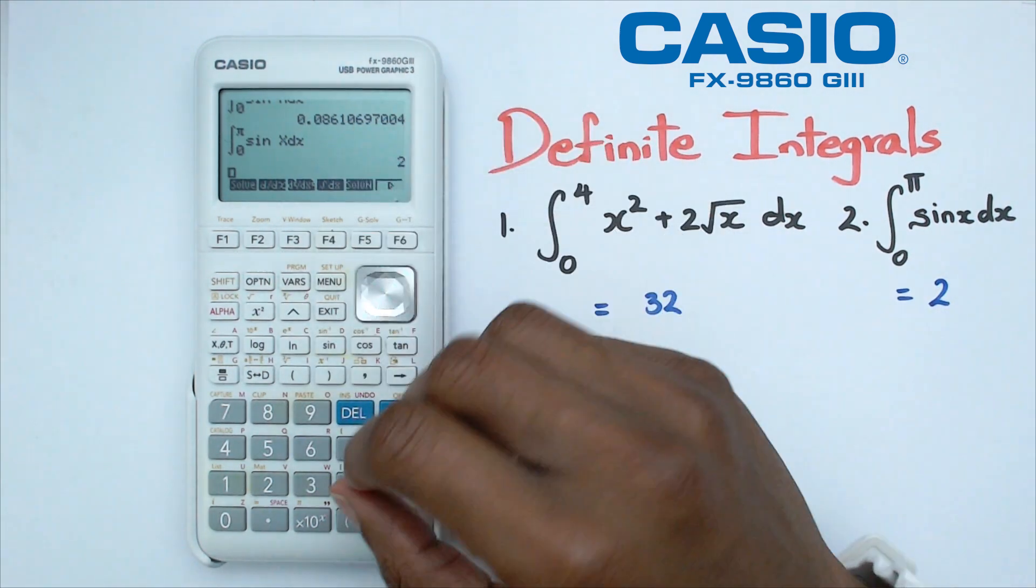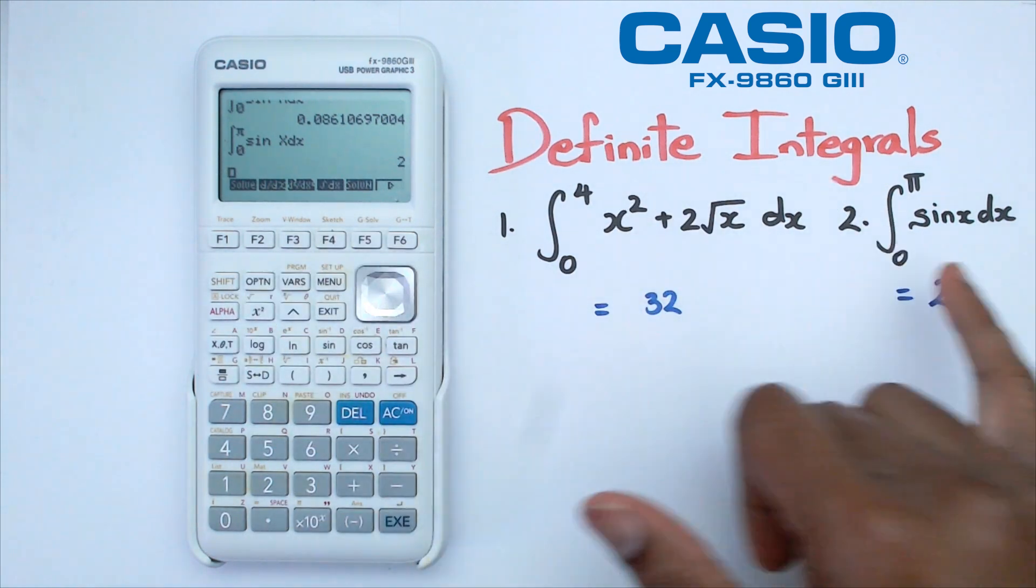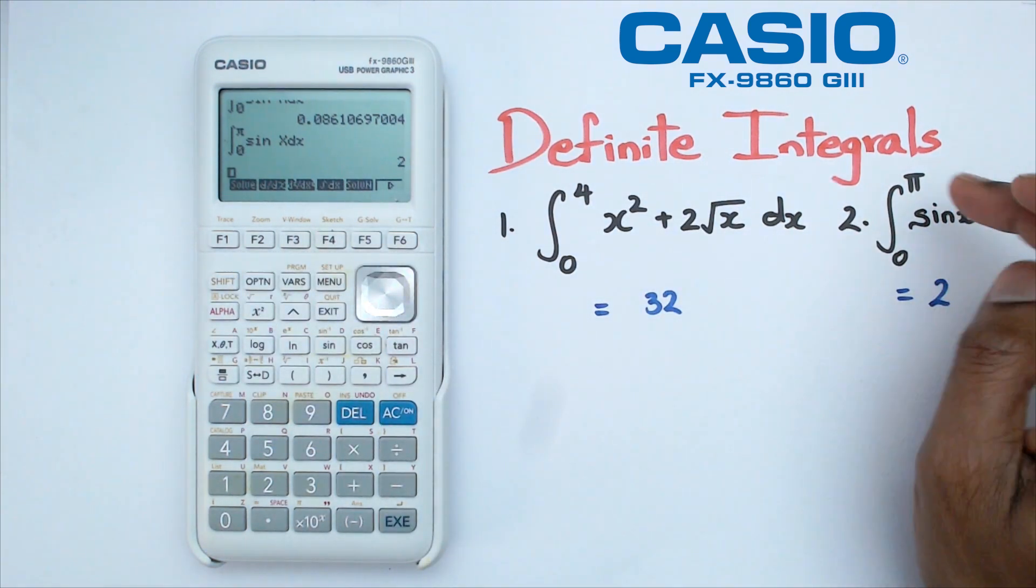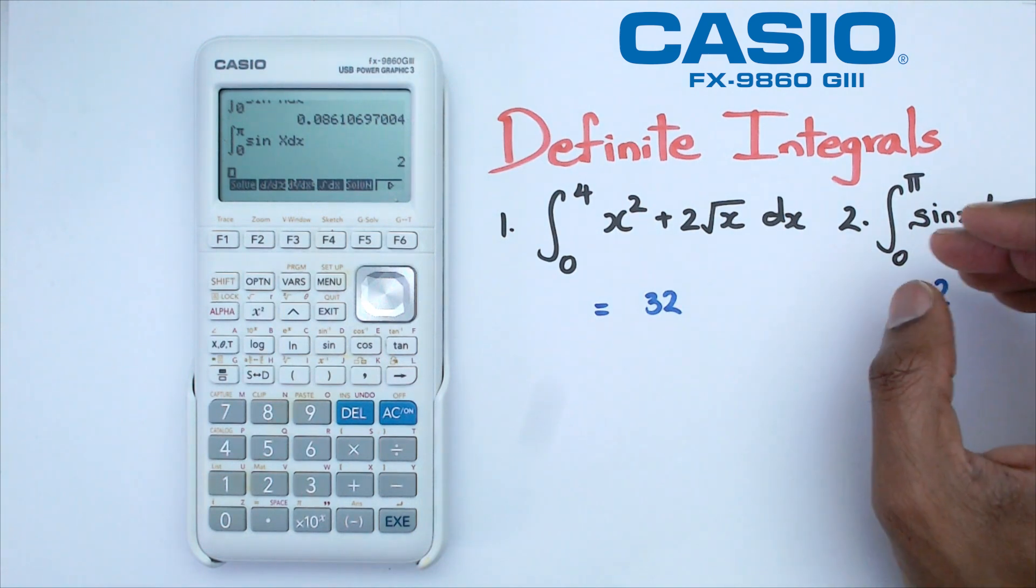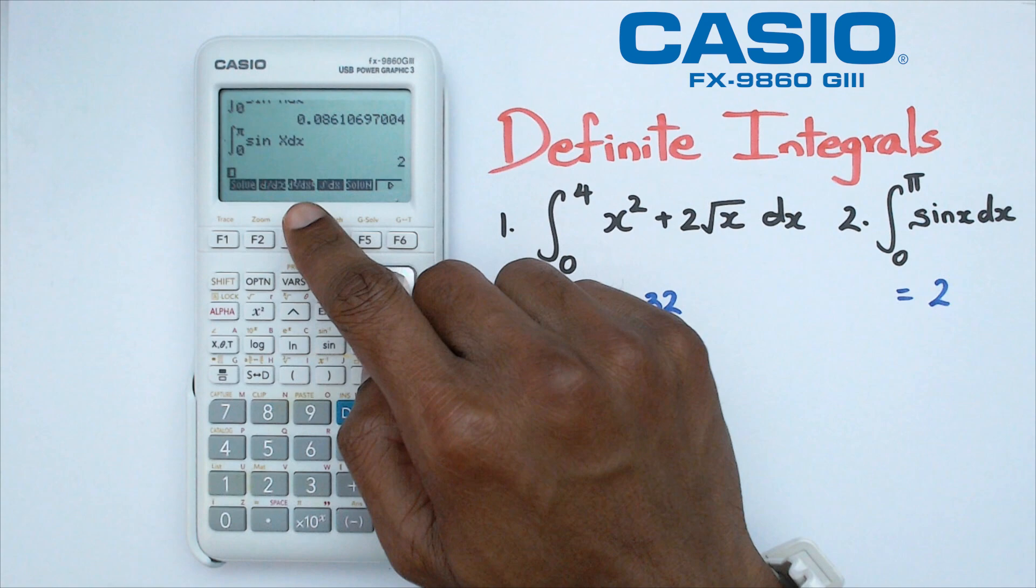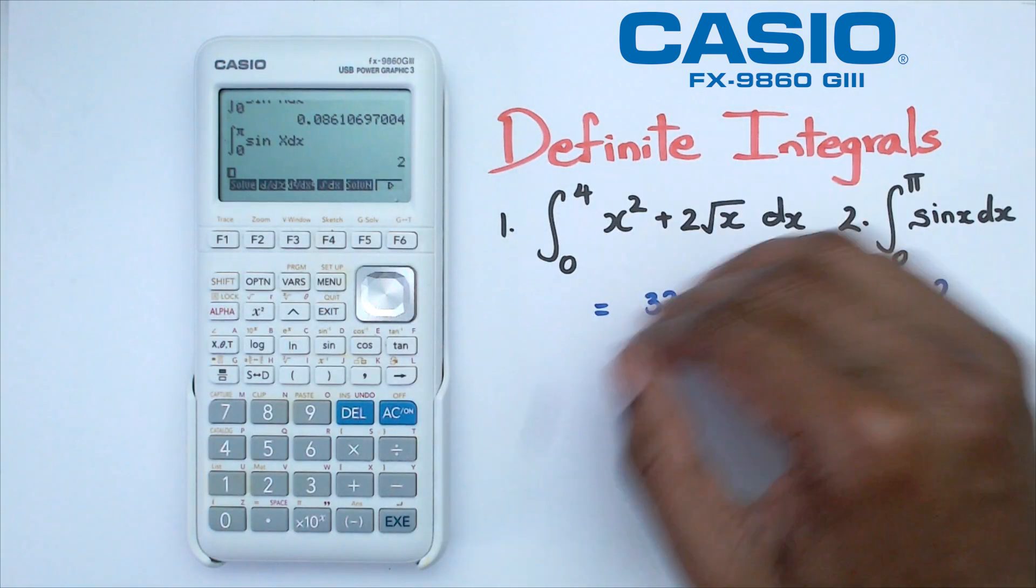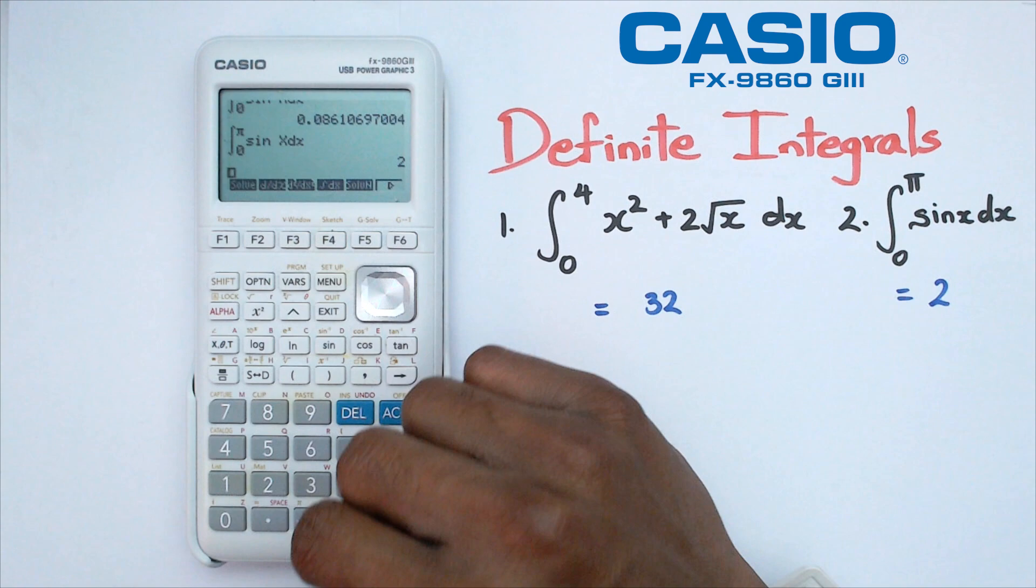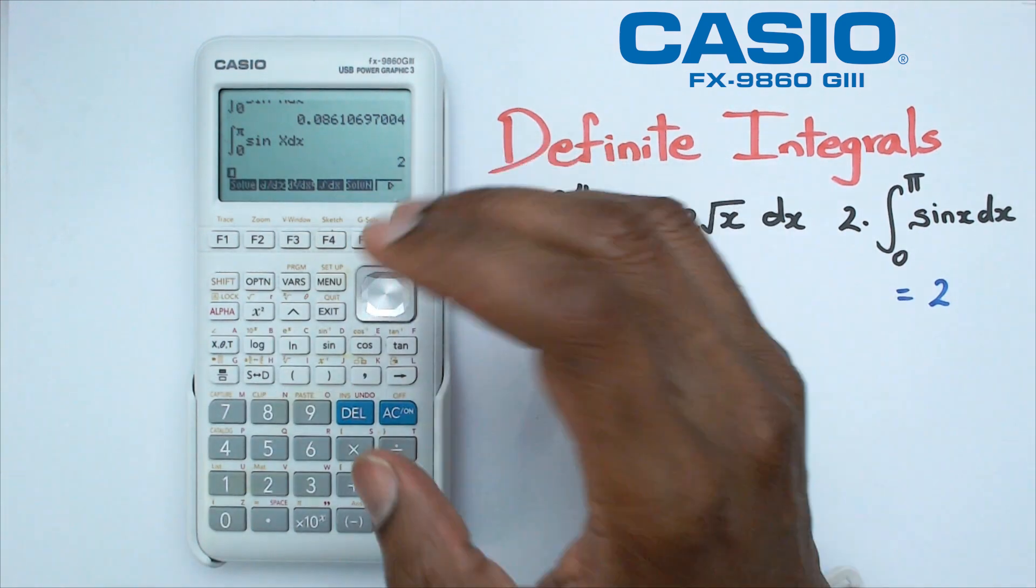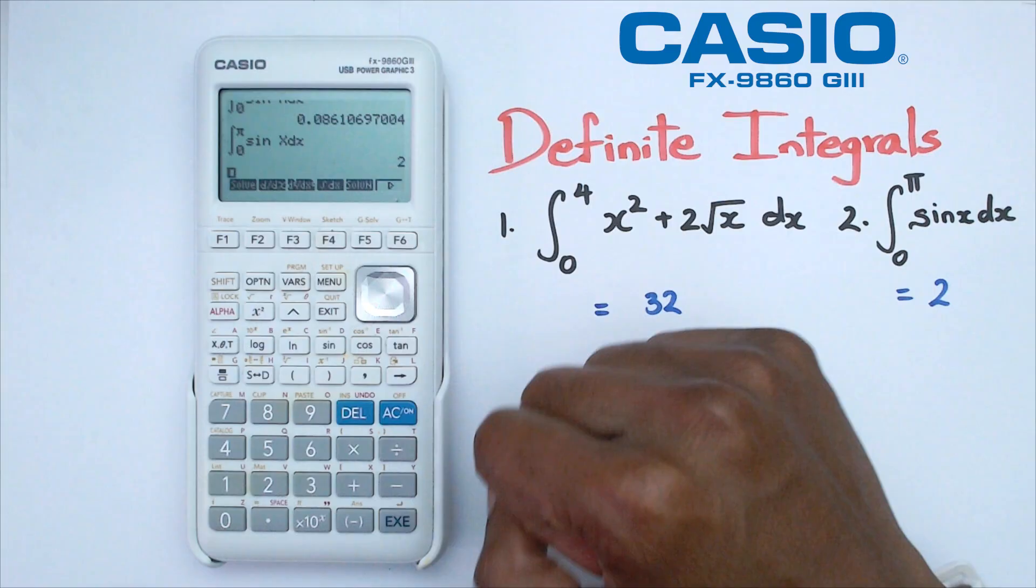One thing to remember about doing definite integrals on this calculator: when working with trig functions, make sure the calculator mode is in radians, not degrees. Second, some people integrate the function first and then put the integrated function in the calculator. You don't need to do that—you can put the original function and limits, and you're good to go. And that's how you calculate definite integrals on this Casio graphics calculator.